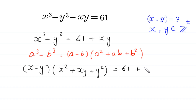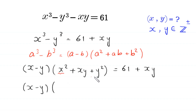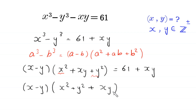Next, x minus y times — we make a group of x squared plus y squared and this xy. So x minus y times (x squared plus y squared plus xy) is equal to 61 plus xy. We use small parentheses here to make this a group.